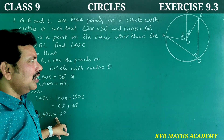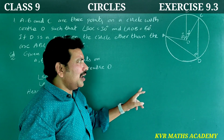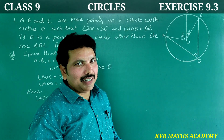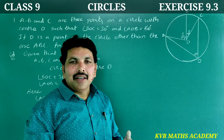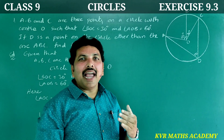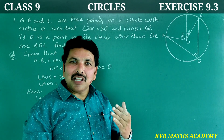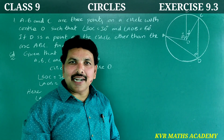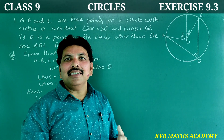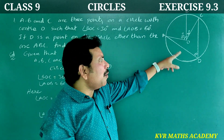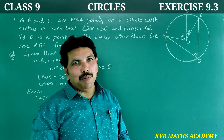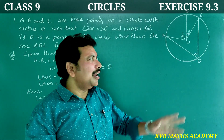Angle AOC is equal to 90 degrees. Now to find angle ADC, we use Theorem 9.7: the angle subtended by an arc at the center is double the angle subtended by it at any point on the remaining part of the circle.